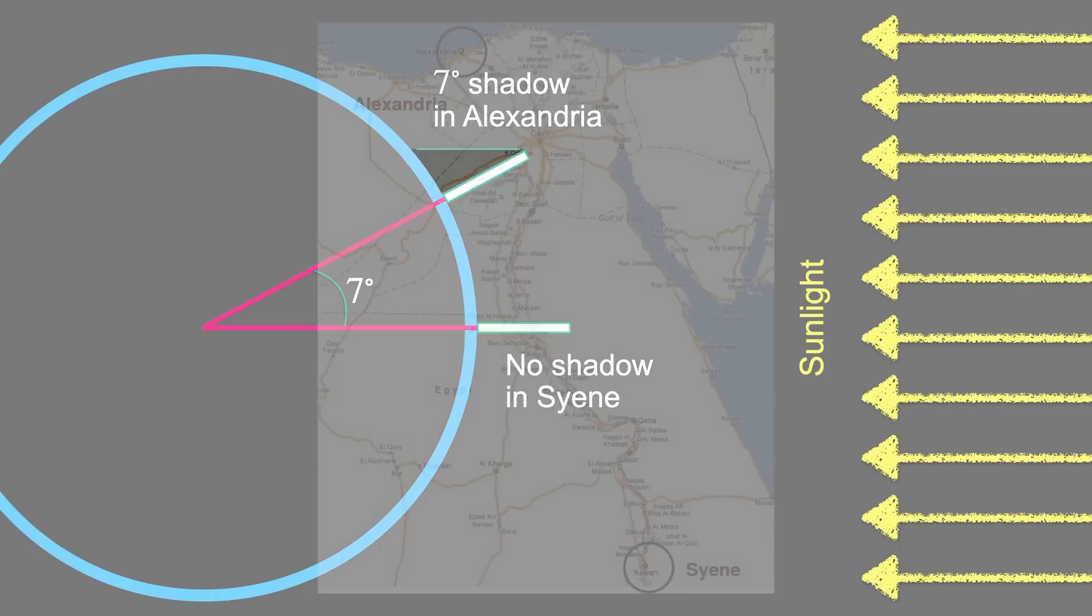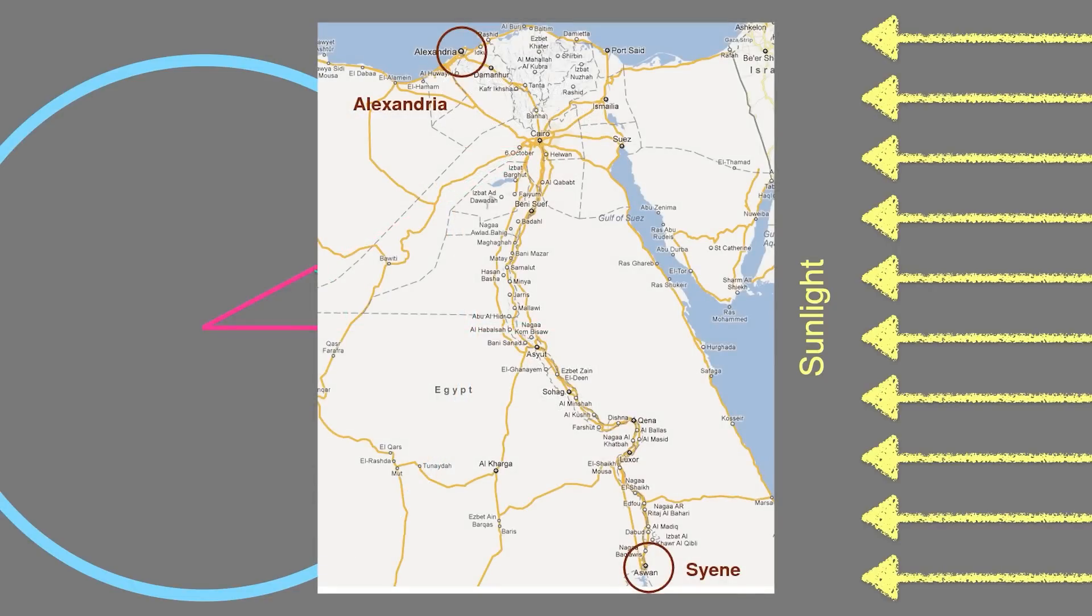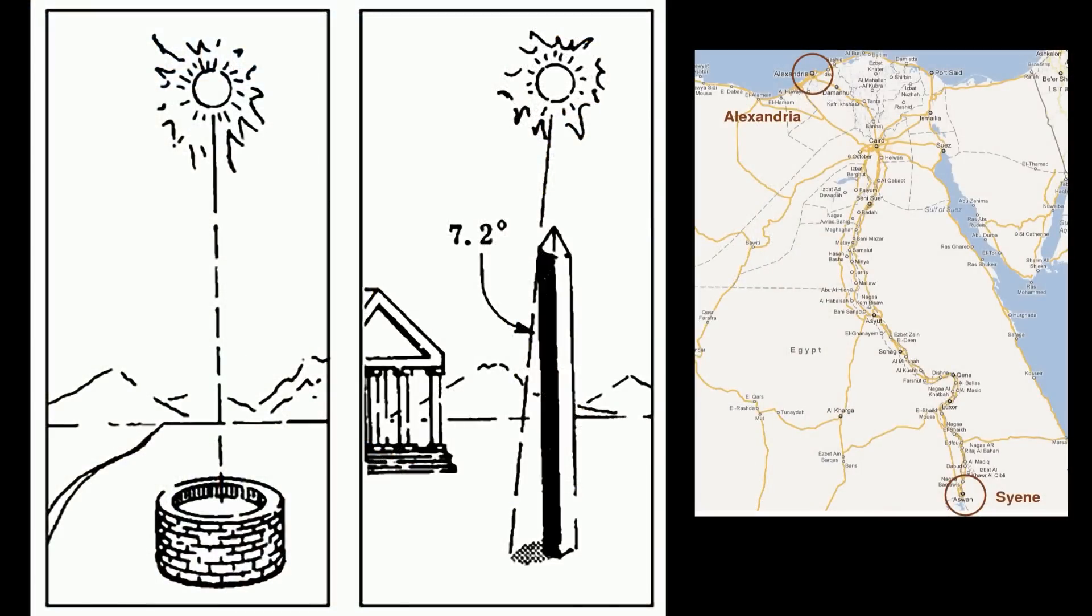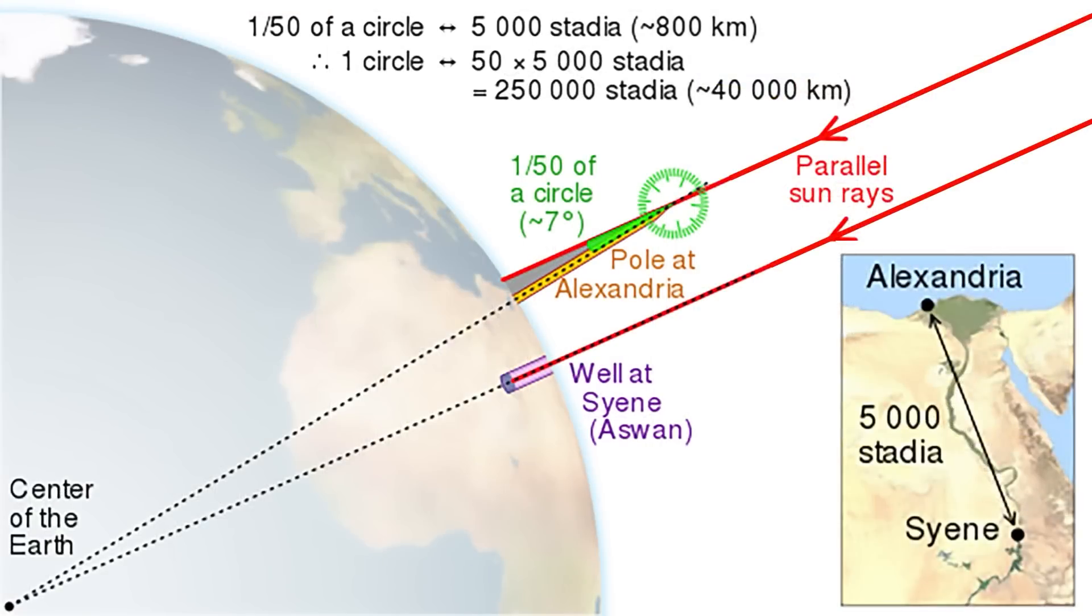So what Eratosthenes decided to do, he decided to measure the distance between Syene and Alexandria, and measure the angle of the shadow in Alexandria when it had no shadow in Syene. And he found that the angle of the shadow at that time was about seven degrees. And he also found that the distance between Alexandria and Syene was, he used a particular measuring unit called a stadia, and a stadia is about 0.6 kilometers.